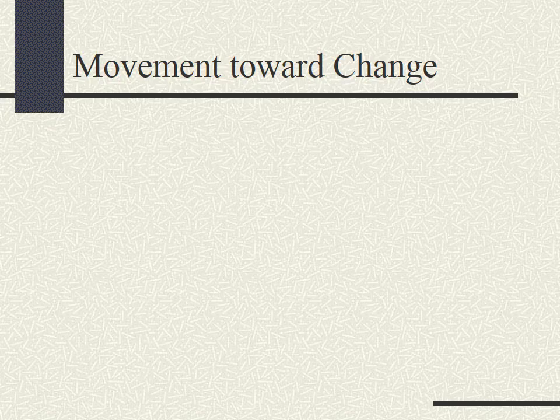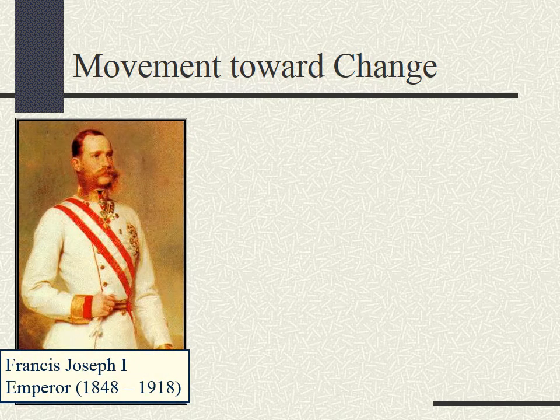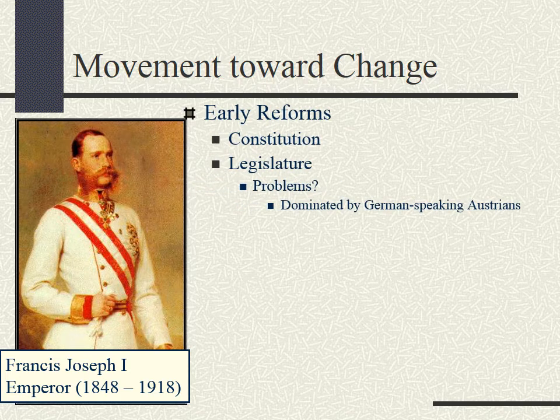Francis is out and Francis Joseph is now the emperor. He comes in at a very young age — check out the sweet mutton chops. He's given the keys to the empire, but it's very similar to being given the keys to a 1972 Pinto that has the threat of exploding at any time it gets dinged on the bumper. Francis Joseph needed to find a way of maintaining order. The first thing he does is write up a constitution and establish a legislature. But this new government was dominated by German-speaking Austrians, a minority group, so the majority of the population still didn't have a say in government.